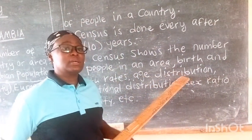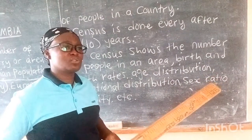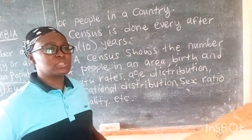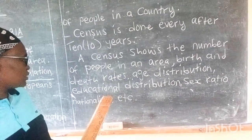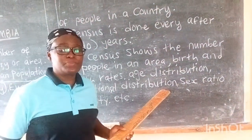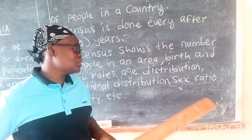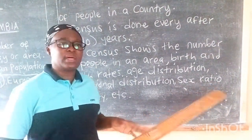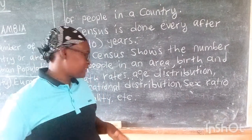Census also records age distribution — for example, those who are below 5 years old, the youths, and those who are above 40. Then educational distribution: how many are in school or how many are educated in your family. Also sex ratio, whether they are males or females in that family.